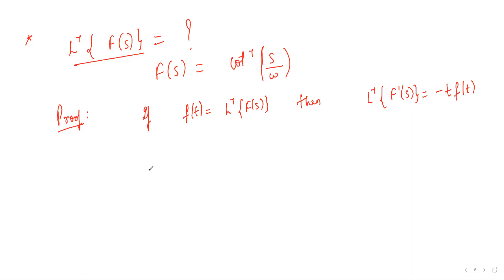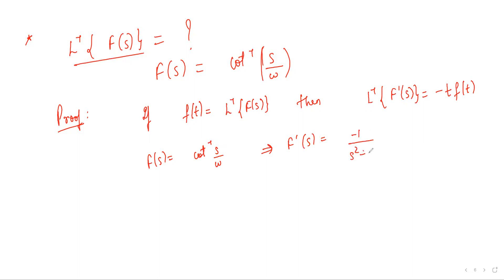In our case, F(s) = cot⁻¹(s/ω). Differentiating this, we have F'(s) = -1/(s² + ω²) times the derivative of (s/ω) with respect to s, which is 1/ω.